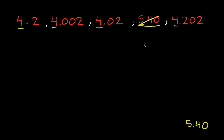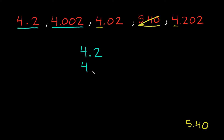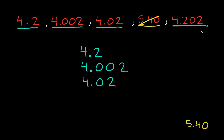Now all we have to do is compare these four other numbers, and the useful way of doing that is by listing them in a column — but you also have to line them up by their place value. So the first number is 4.2, next we have 4.002, then 4.02, and lastly 4.202. You can see the decimal points are all aligned.